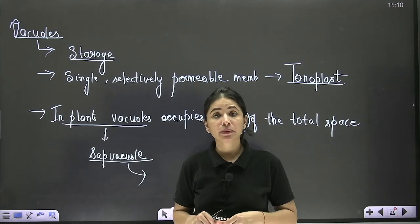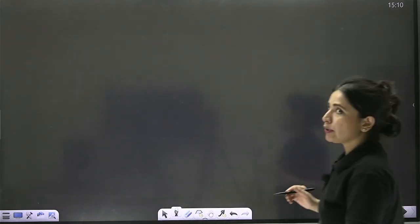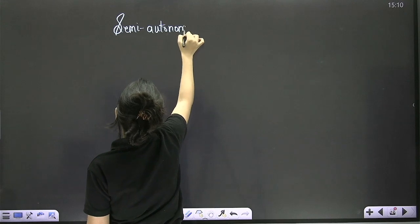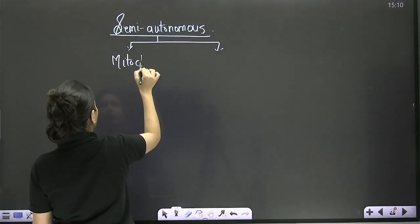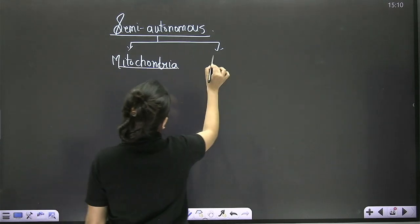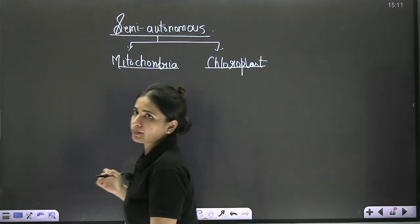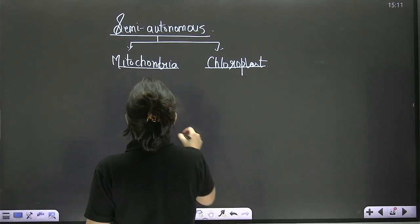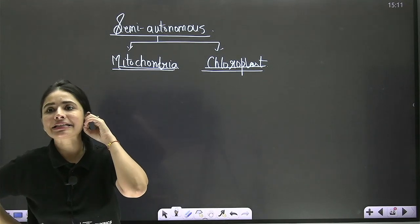Now we are going to proceed with the next set of cell organelles called semi-autonomous cell organelles — mitochondria and chloroplast. Both are double membrane-bound. The question is: why are they called semi-autonomous?